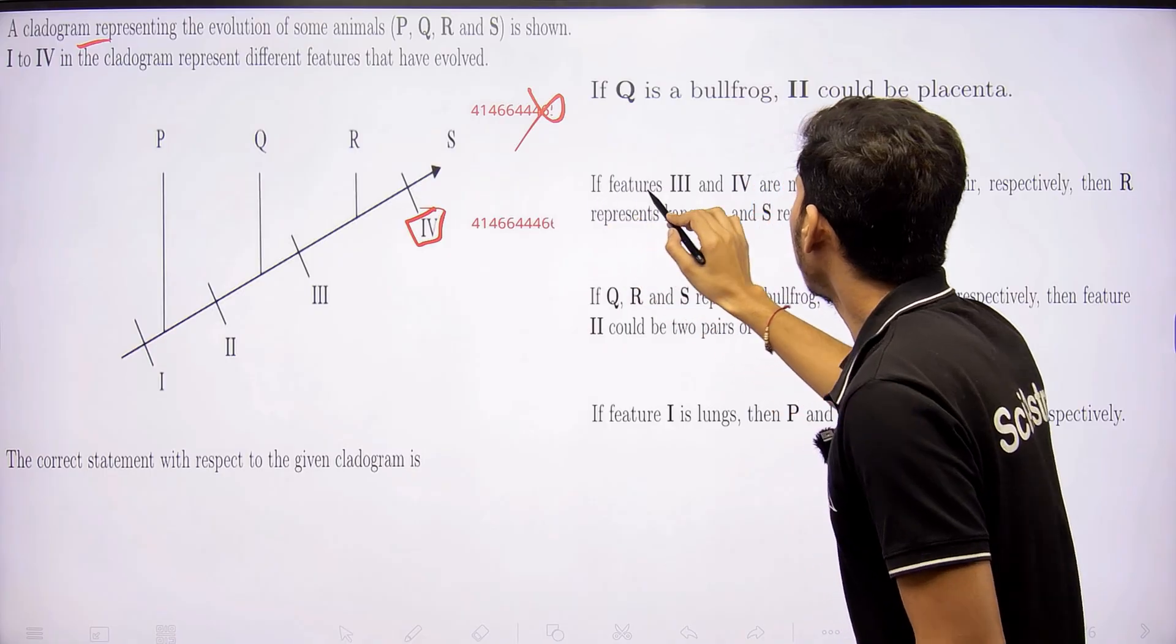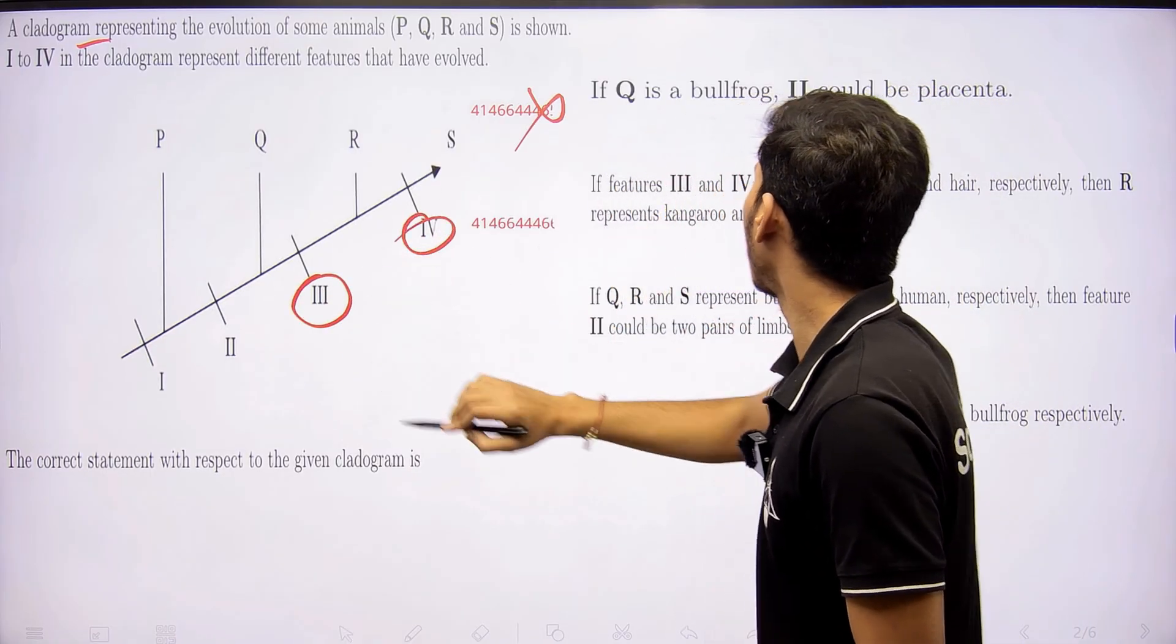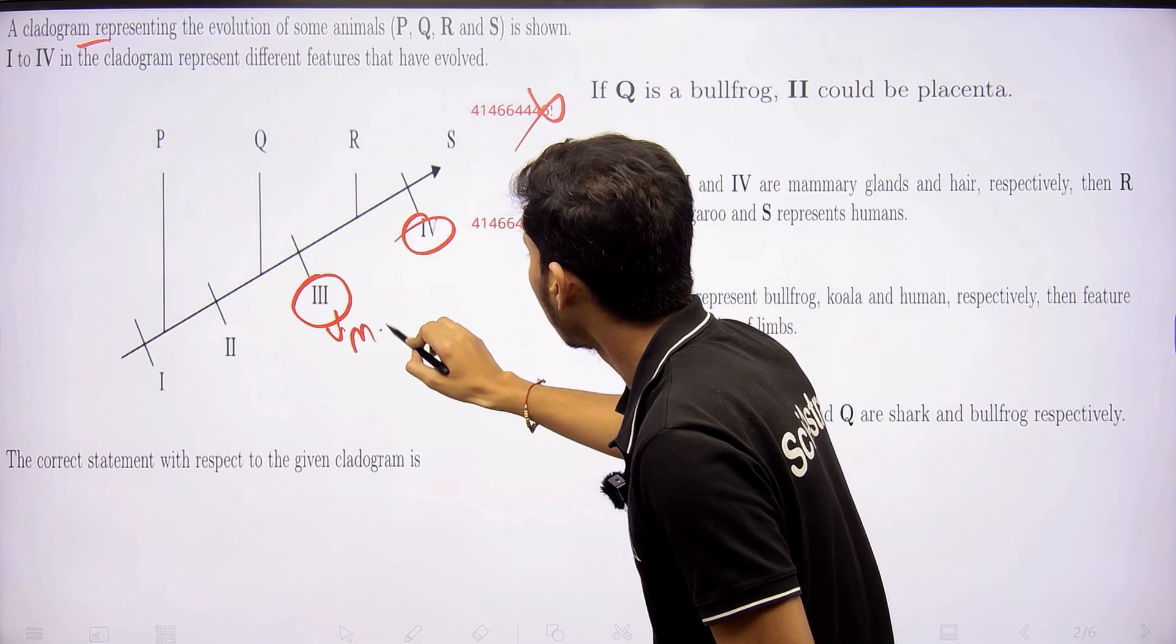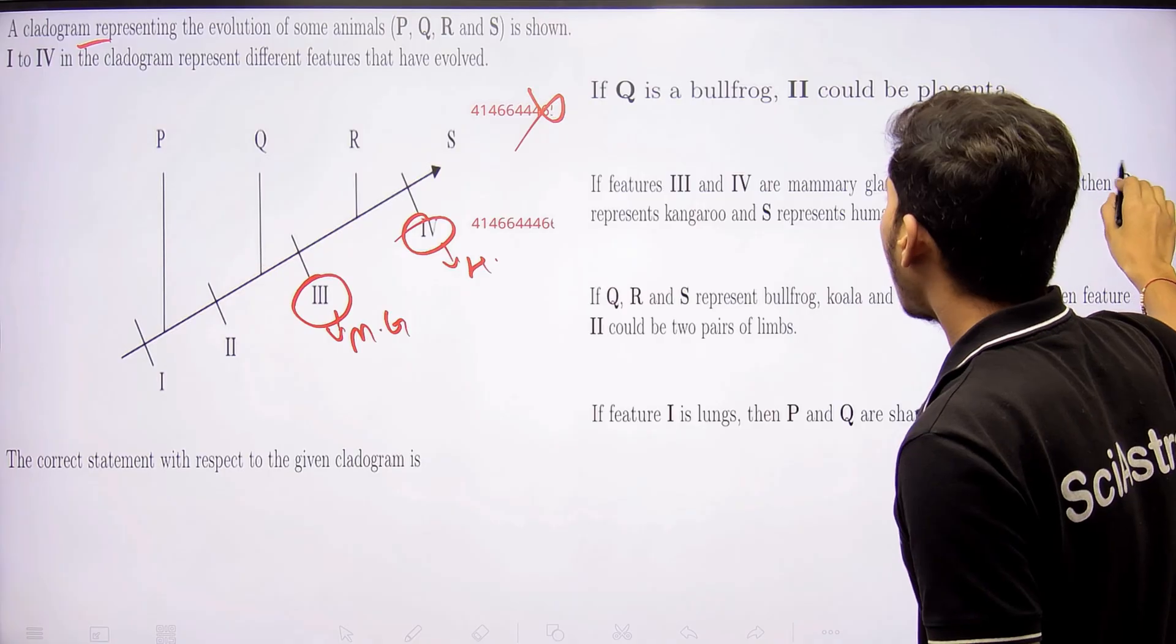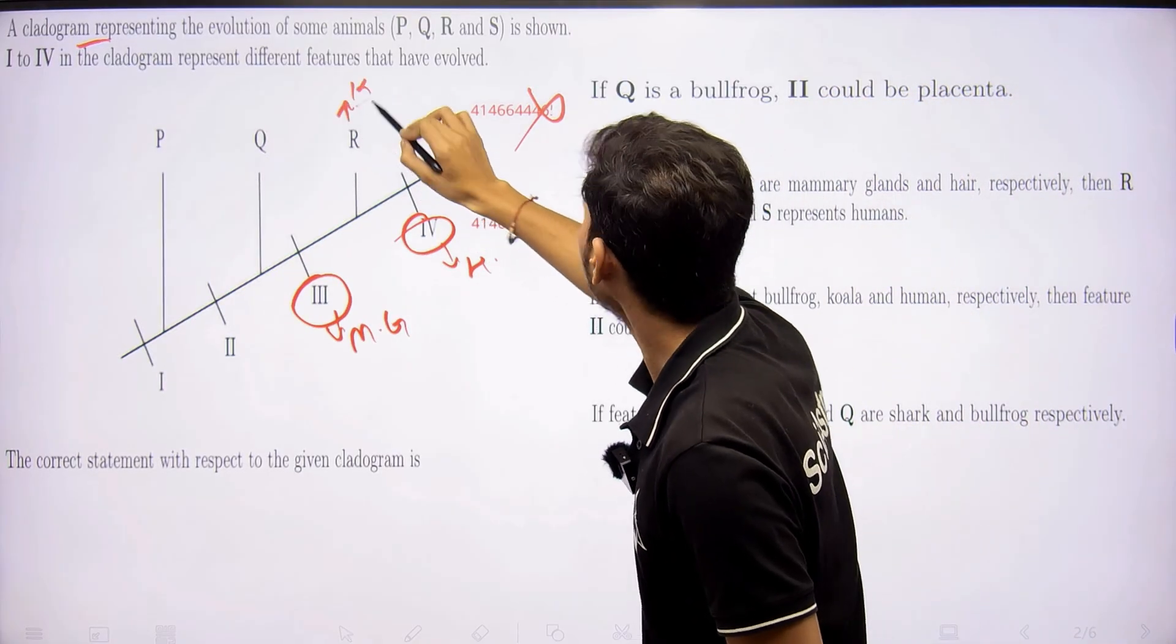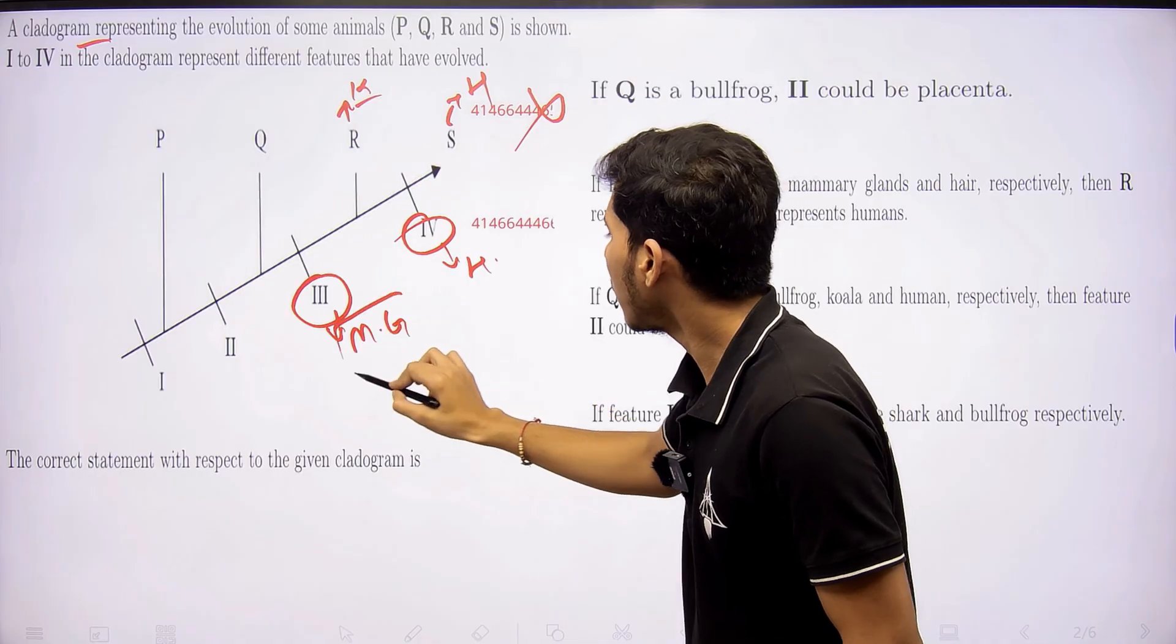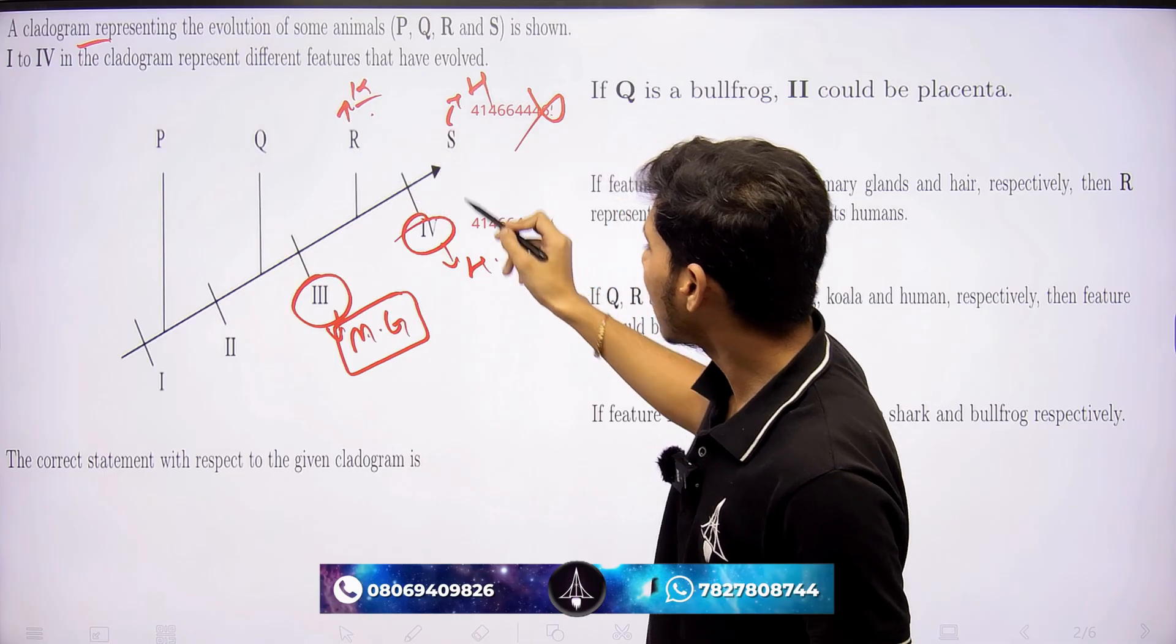Now next, if features 3 and 4 are mammary gland and hair. Let's say here, this is mammary gland and this is hair, body hair. Respectively, then R represents kangaroo and S represents human. So, we know that mammary gland is present in kangaroo. But hairs are also present in kangaroo.